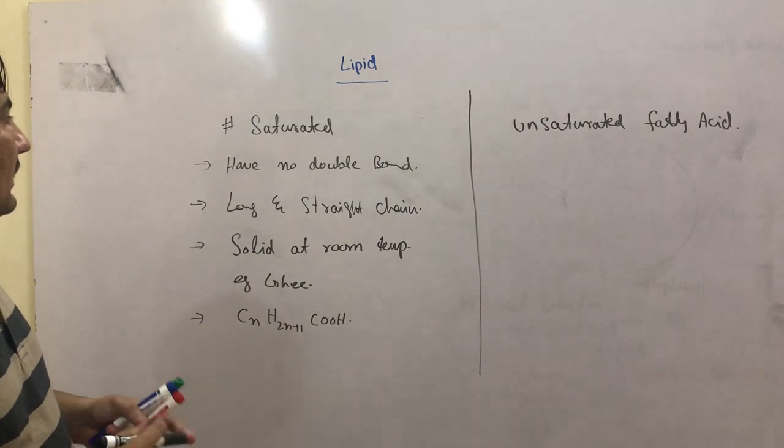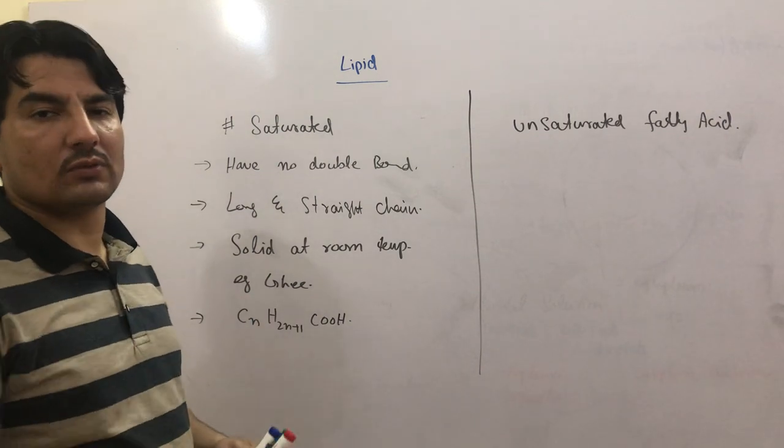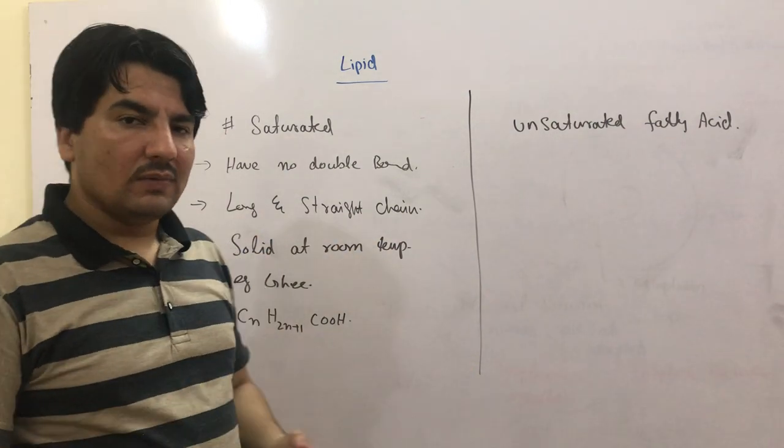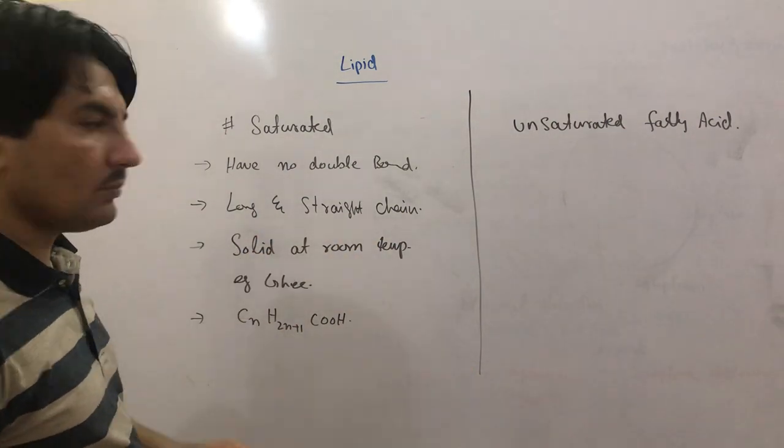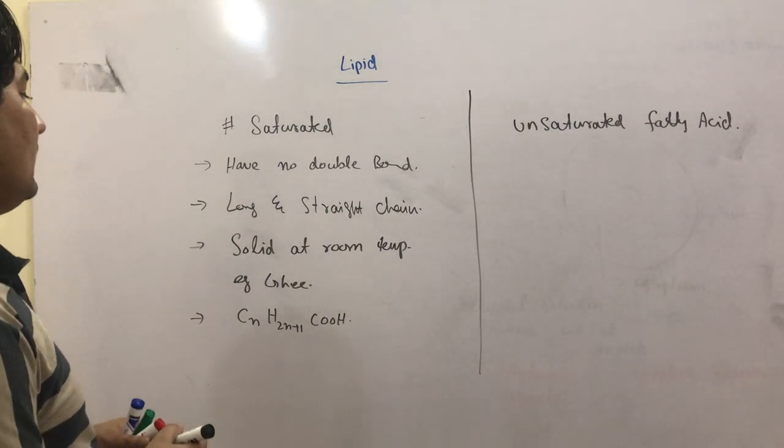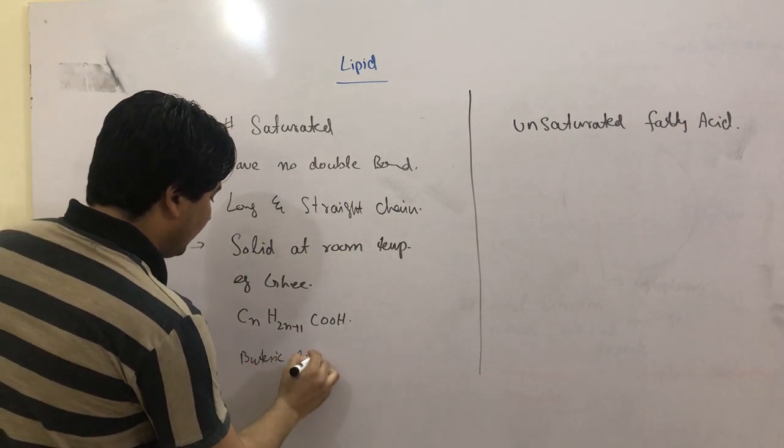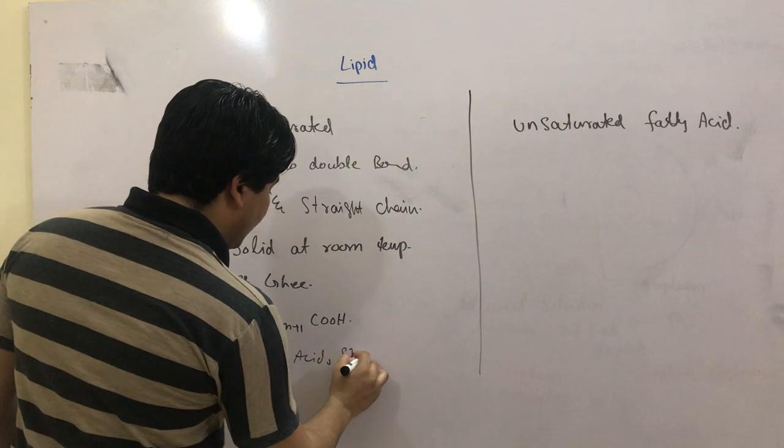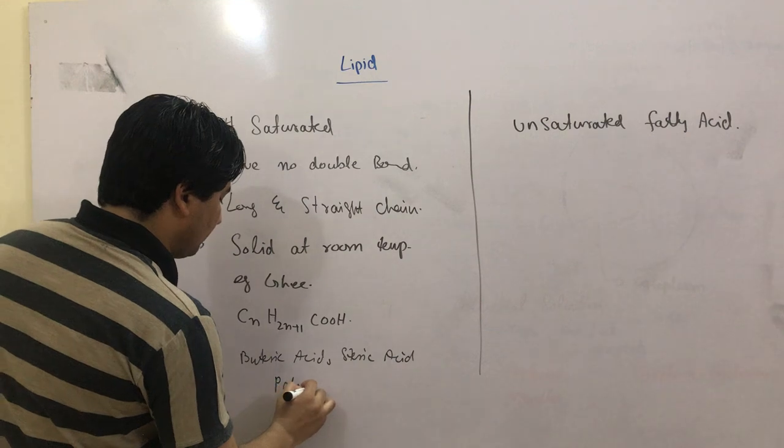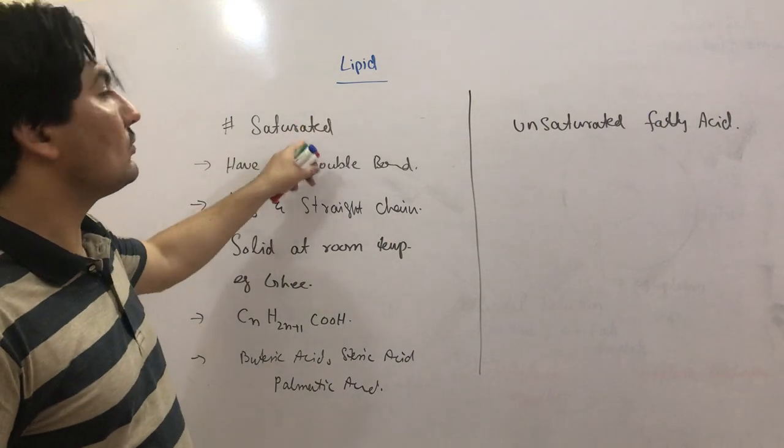These are some basic characteristics - they have no double bond, the chains are long and straight, and they are solid at room temperature. For example, butyric acid, stearic acid, and palmitic acid. These acids are known as saturated fatty acids.